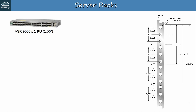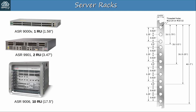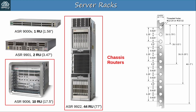This Cisco ASR-9000V is 1 rack unit in height; its height is 1.56 inches, so it fits well within 1 rack unit. The ASR-9901 is 2 rack units, and its actual height is 3.47 inches, just under the size of 2 rack units. The ASR-9006 is 10 rack units, and its height is 17.5 inches, so exactly 10 rack units. And on the extreme end there's the ASR-9922, which is 44 rack units, so it takes up an entire rack. Two of the devices shown here are chassis routers — the two larger ones. Within the chassis there are modular parts that can be customized depending on what kind of interfaces and how many interfaces you need on the device.